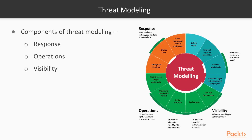There are three components of threat modeling: response, operations, and visibility. Response refers to whether you have tested your incident response plan. Operations means whether you have the right operational processes. And visibility refers to identifying your biggest vulnerabilities in your organization.